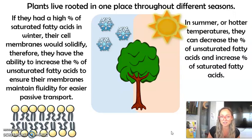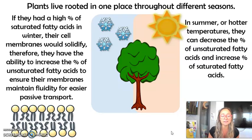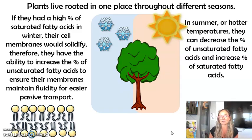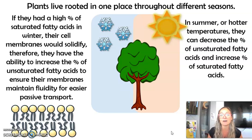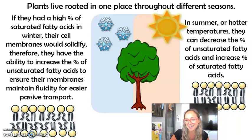In summer when it gets really hot, think about bacon grease: if you had some in the fridge and it was hard, then put it in a hot frying pan, it's going to become liquid again. So in warmer temperatures, plants need to also maintain fluidity of their cell membranes. It makes sense that they would actually decrease their number of unsaturated fatty acids and increase the percentage of saturated fatty acids to compensate.